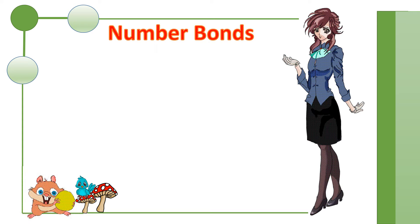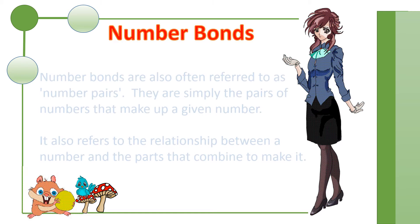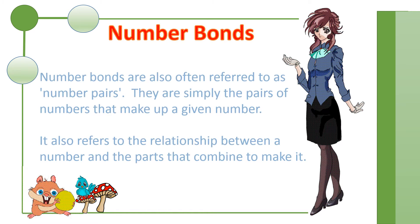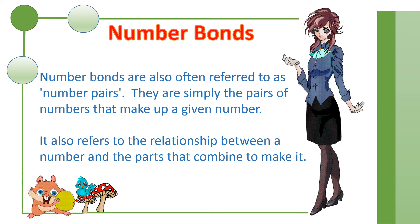Today I am going to talk about number bonds. Do you know what are number bonds? Number bonds are also often referred to as number pairs. They are simply the pairs of numbers that make up a given number. It also refers to the relationship between a number and the parts that combine to make it. The number bond concept is very simple. It is an important foundation for understanding how the numbers work.